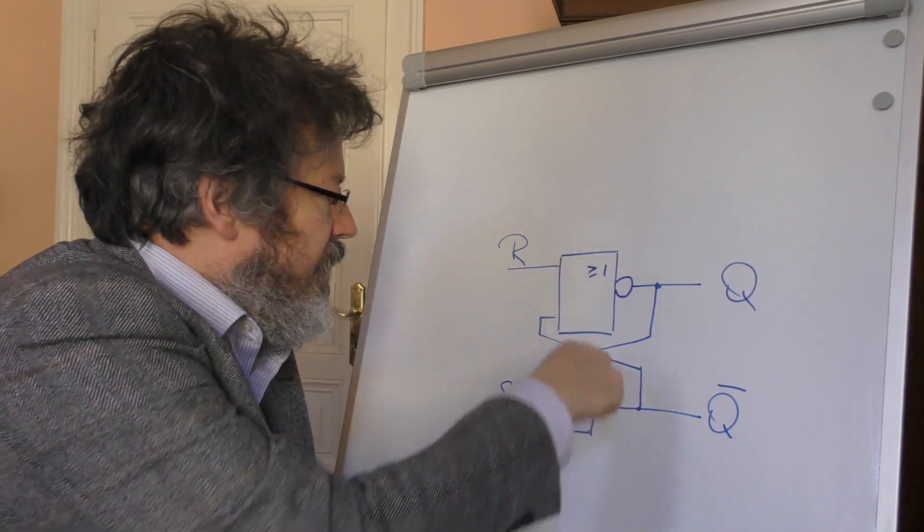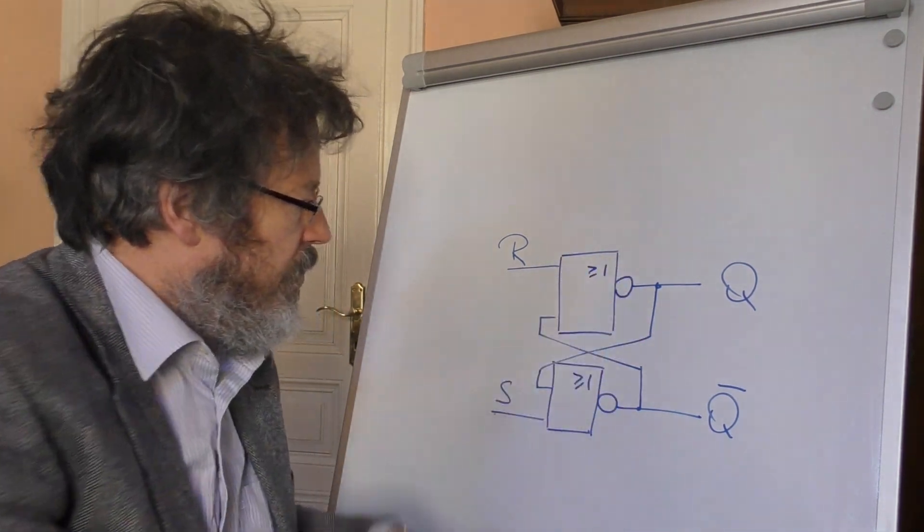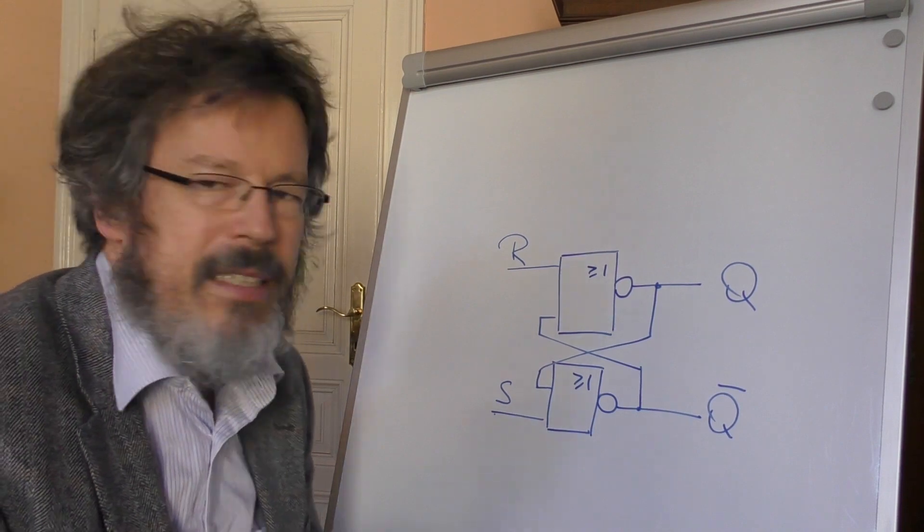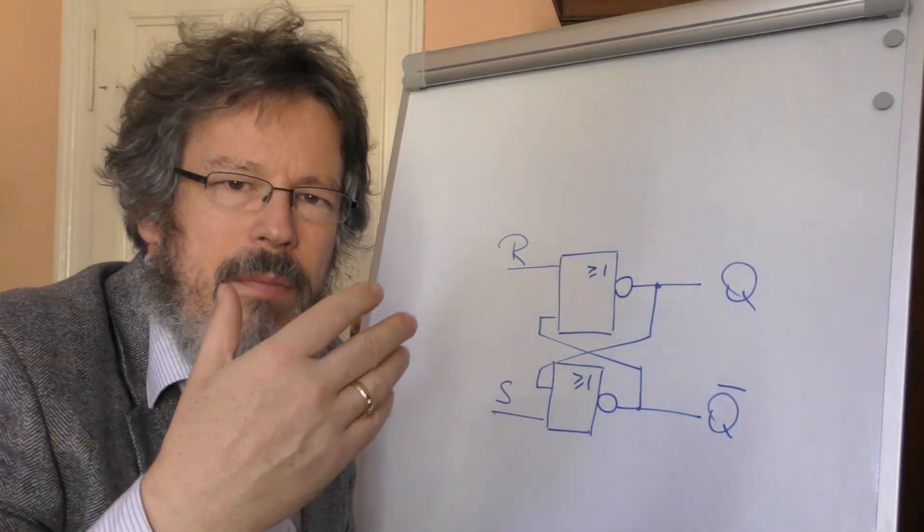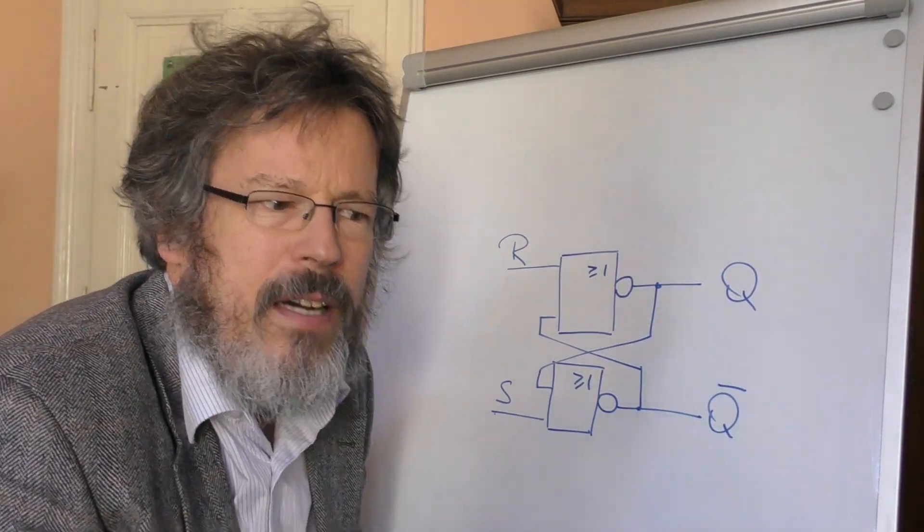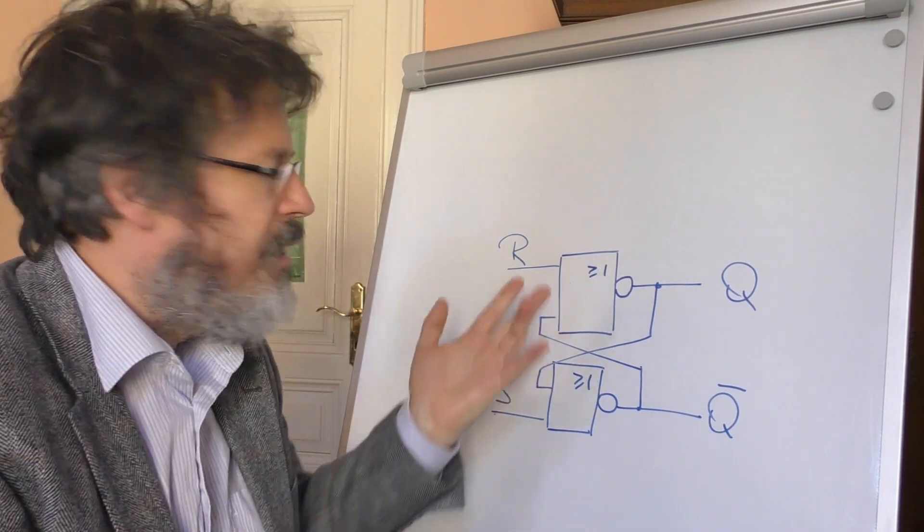The important thing here is this connection. These are two NOR gates which are feedback-coupled. And you can now think, is there any other gate which can make it even simpler?